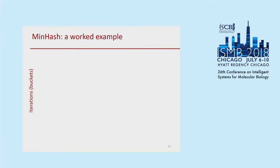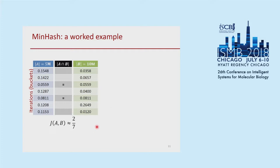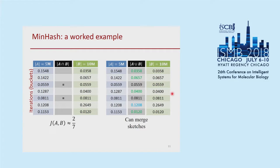Let's work through a simple example. Suppose we have sets A and B with 5 million and 10 million items respectively. We take 7 minimum hashes of all of them. Measuring overlap would normally take a long time because you'd have to do duplicate finding for all possibly 15 million elements. But by just doing these hash functions, you find that two of the minimum hashes match, giving an estimate of Jaccard index of about 2/7. You would do this with more hashes in practice. As with HyperLogLog, we can merge the MinHash sketches for A and B by taking the smaller of the values for each hash.